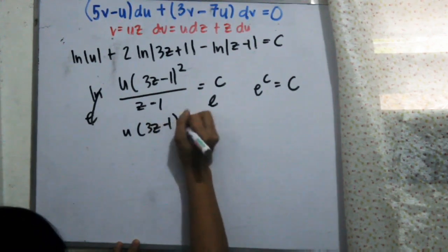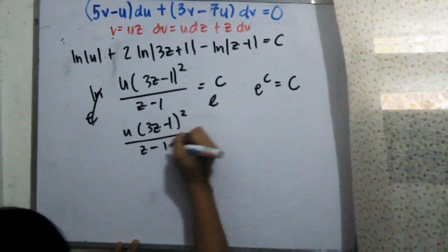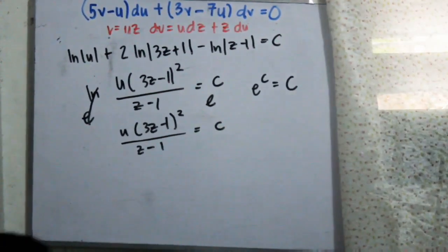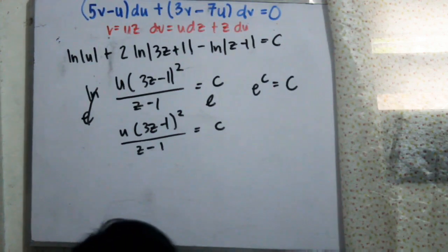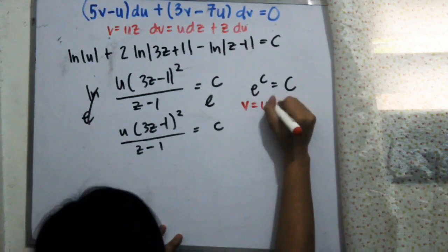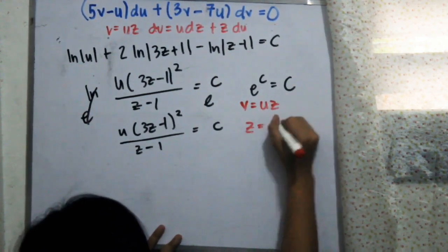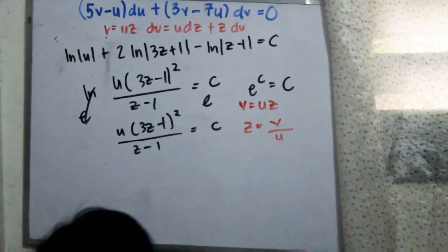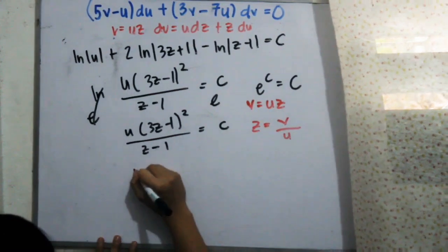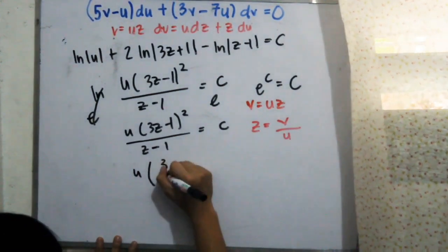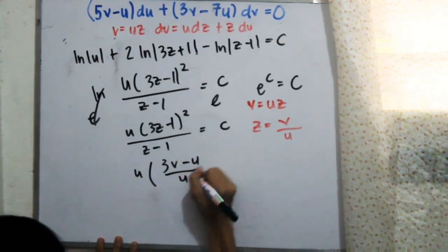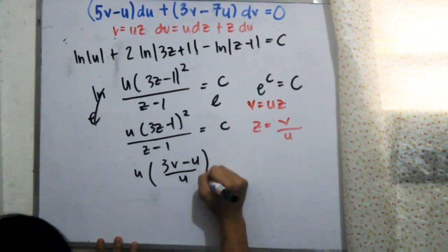We arrive at U multiplied by (3J minus 1) squared all over (J minus 1) equals C. The next step is to back-substitute using our original let: v equals uj, which gives J equals V over U.